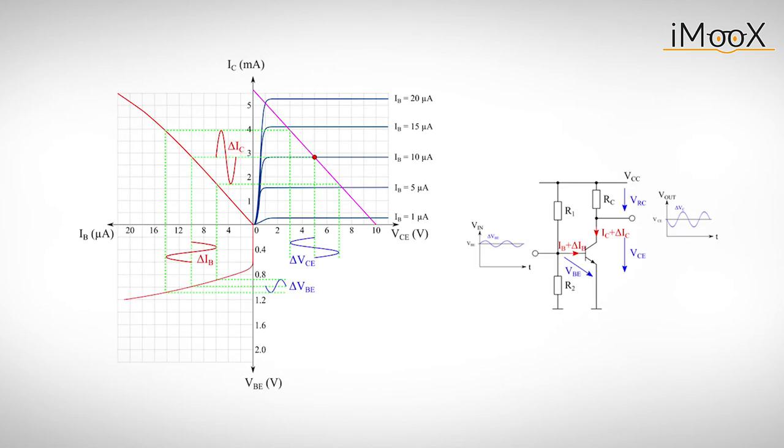In a second step, we can amplify a small AC voltage delta VBE at the input, which leads to a corresponding AC current IB at the base, an amplified AC current delta IC and finally an amplified voltage delta VCE at the output.